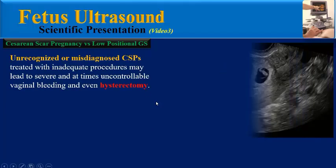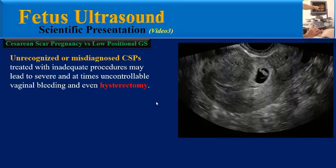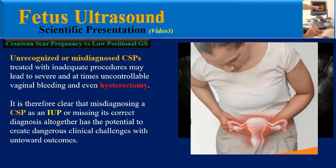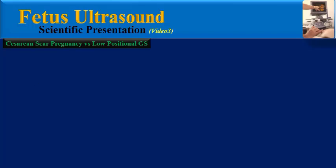Unrecognized or misdiagnosed CSPs treated with inadequate procedures may lead to severe and at times uncontrollable vaginal bleeding and even hysterectomy. It is therefore clear that misdiagnosing CSP as an intrauterine product or missing its correct diagnosis altogether has the potential to create dangerous clinical challenges with untoward outcomes. If you do a Google search, you will find numerous papers about CSP diagnosis and its challenges.